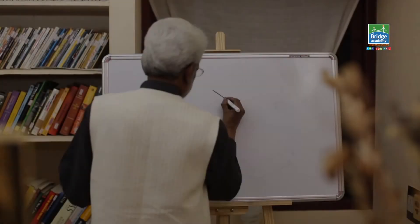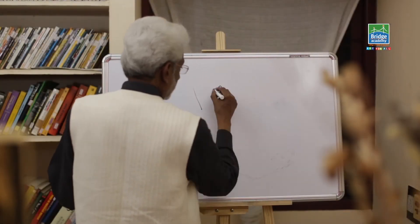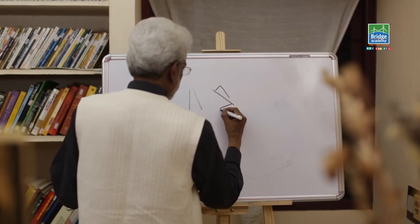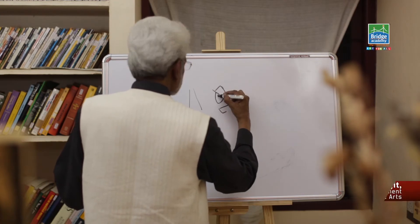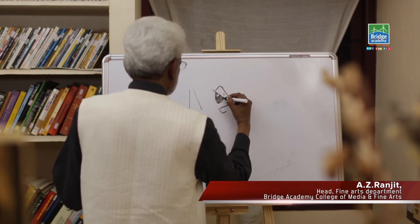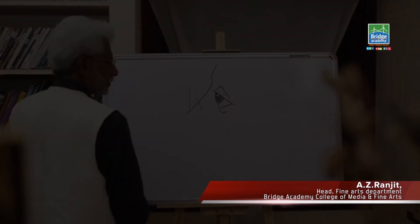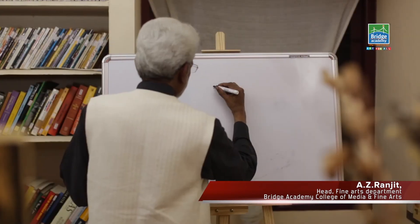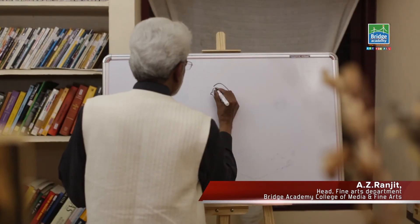We will draw the profile of the eye — two diagonals and a semicircle for the pupil. Leave a highlight and darken it. That's the three-quarter of an eye.